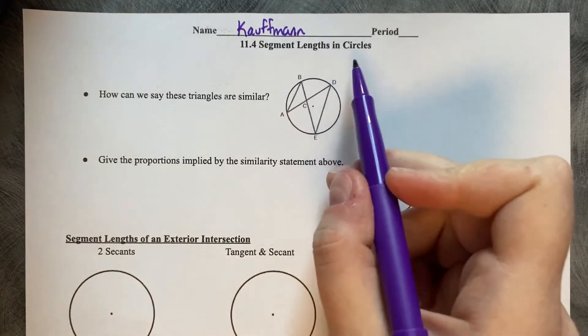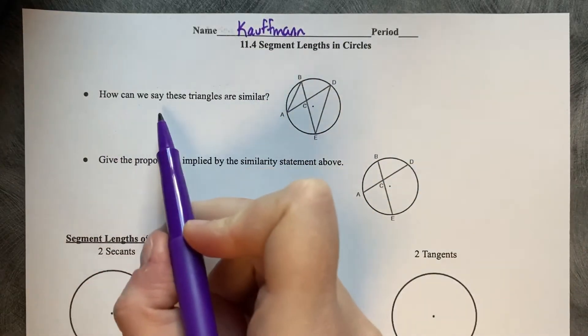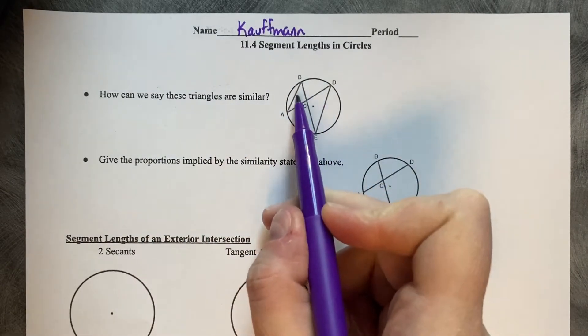11.4 Segment Links and Circles. How can we say that these triangles are similar? These two triangles.